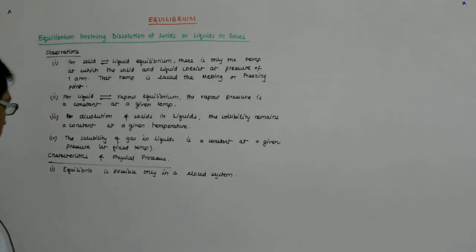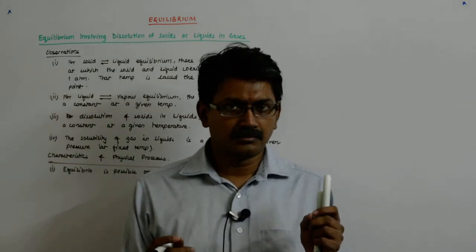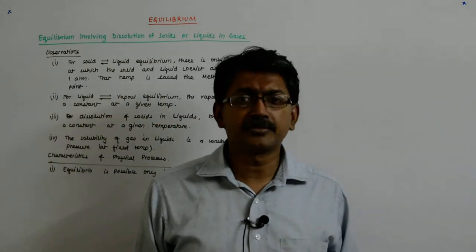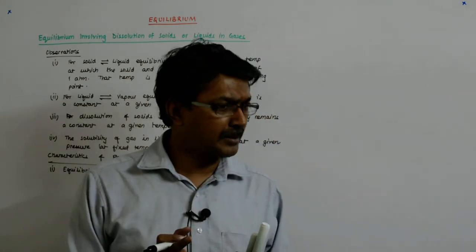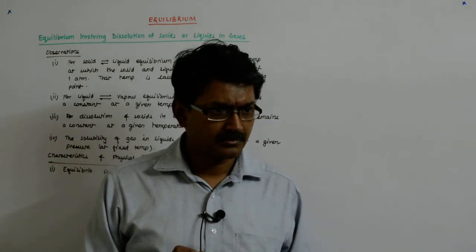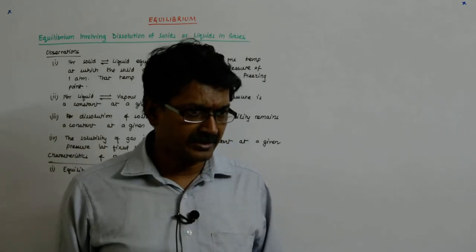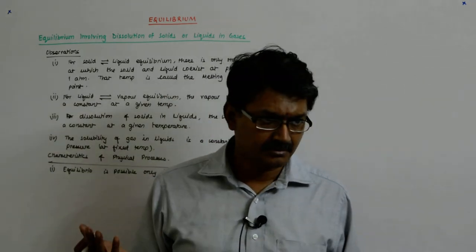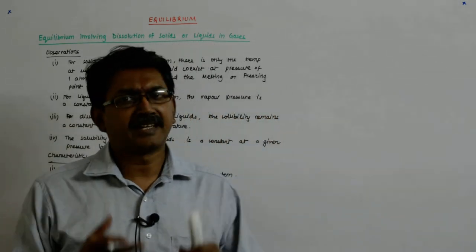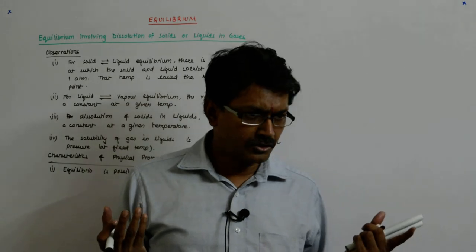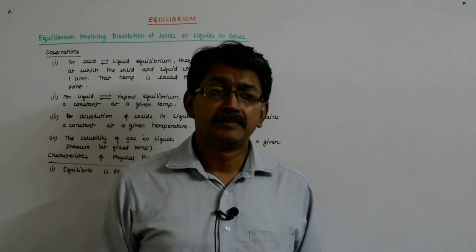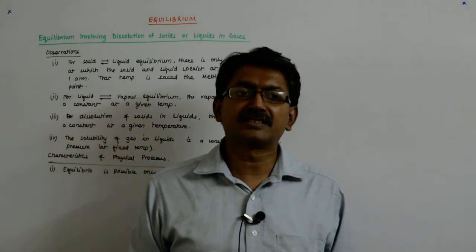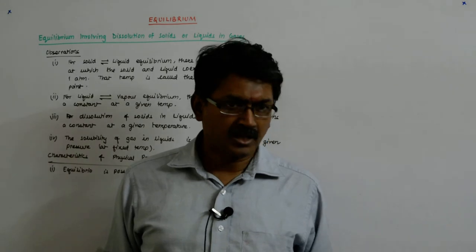For liquid-vapor equilibrium, the system had to be physically closed. For solid-liquid equilibrium, it needed to be a closed system so that no heat comes out or goes away — you have to maintain the temperature at 0°C. Same with solid dissolving in liquid, or solid becoming a gas: in the iodine case, you keep it covered with a bell jar so no more iodine dissolves and becomes gas.